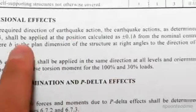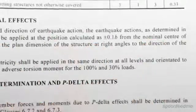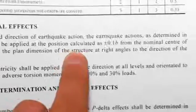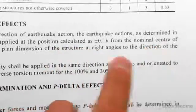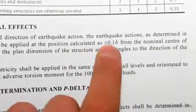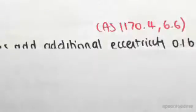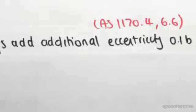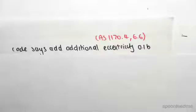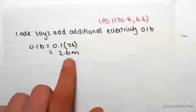So we need to now add on 0.1b to this eccentricity. b is just the width and length of our structure, so b we know is 26 meters—b is just 26 and 26.